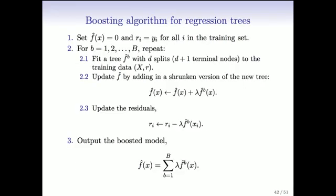We'll look first at boosting for regression trees — it's simpler to explain there. We think of it as a sequential algorithm. With boosting, what we do is keep on fitting trees to the residuals, so we improve the fit. We start off trying to build a function f(x), which is going to be an average of trees. It starts off at zero and the residuals will just be the data observations y_i. We then fit a tree with d splits — in other words, d plus one terminal nodes — to the training data x and r, where r is the current residual. Initially, the residuals are just the observations.